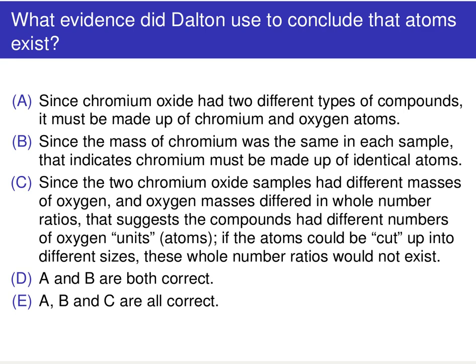...that suggests the compounds had different numbers of oxygen units or atoms. If atoms could be cut up into different sizes then the whole number ratios would simply not exist. Or is it A and B, or are all of A, B, and C correct? Please pause the video and think about which one is correct.